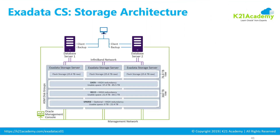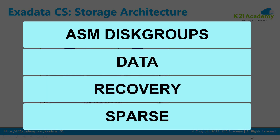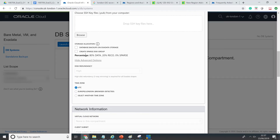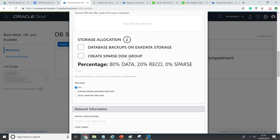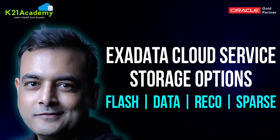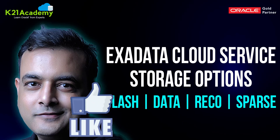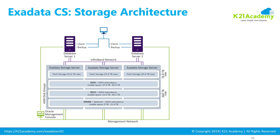Next week, we're going to look at another important topic from Exadata Cloud Service: storage options. As I mentioned previously, you get three storage servers in a quarter rack with flash storage and ASM configured using data recovery and optional sparse disk groups. If you look at the configuration options, you'll see storage allocation, database backup on Exadata storage, and create sparse disk groups. What these options mean and which to pick in what scenario — I'll discuss all that next week. Subscribe for notifications at k2nacademy.com/ExadataCS01, and if you liked today's video, share it with your colleagues and DBA friends.